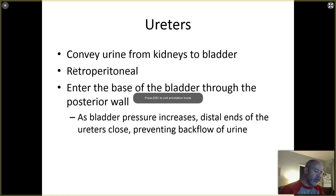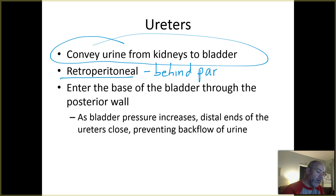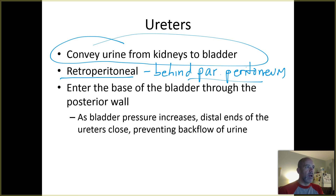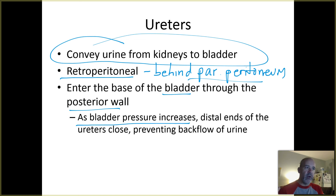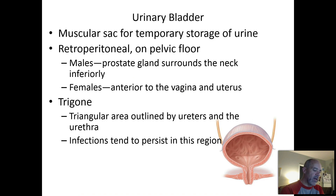The ureters are tubes that convey urine from the kidneys to the bladder. They are retroperitoneal, meaning they are behind the parietal peritoneum — the serous membrane that lines the abdominopelvic cavity. The kidneys are also retroperitoneal. The ureters connect to the bladder through the posterior wall. As the bladder fills and pressure increases, it closes off the distal ends of the ureters, preventing backflow of urine from the bladder back toward the kidneys.